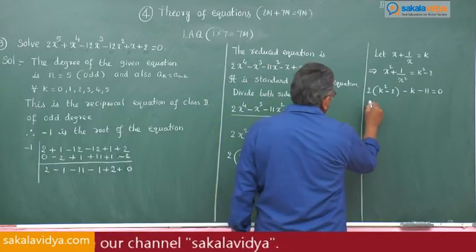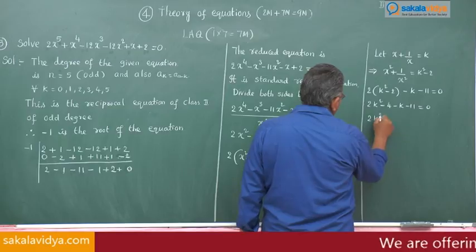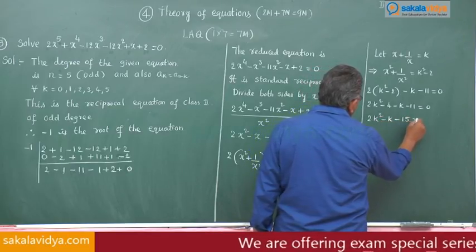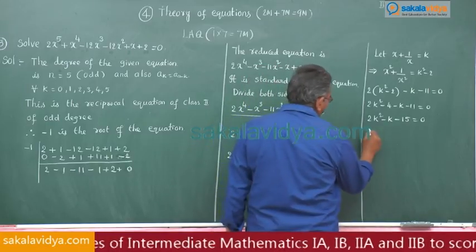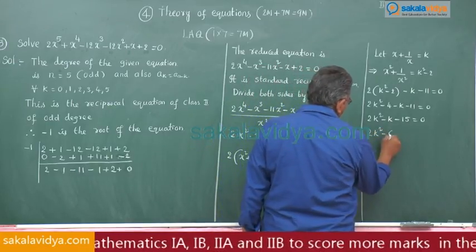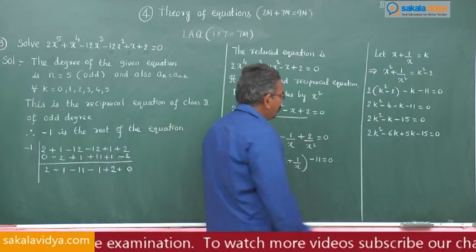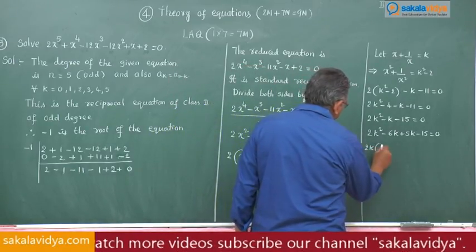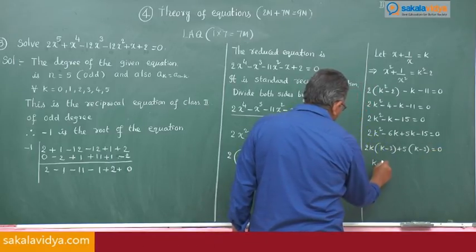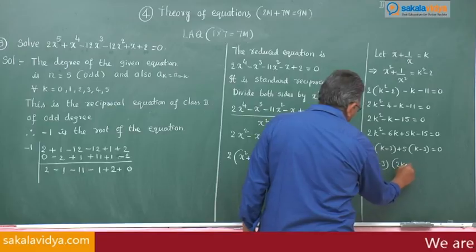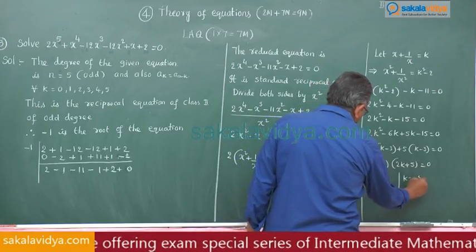Expanding: 2k² minus 4 minus k minus 11 equals 0, so 2k² minus k minus 15 equals 0. Since minus 15 times 2 is minus 30, we write 2k² minus 6k plus 5k minus 15 equals 0. Factoring: 2k(k minus 3) plus 5(k minus 3) equals 0, giving (k minus 3)(2k plus 5) equals 0. Therefore k equals 3 or k equals minus 5/2.